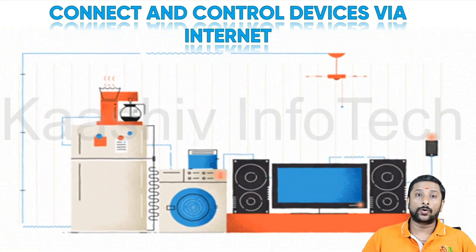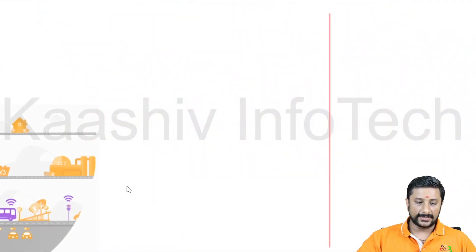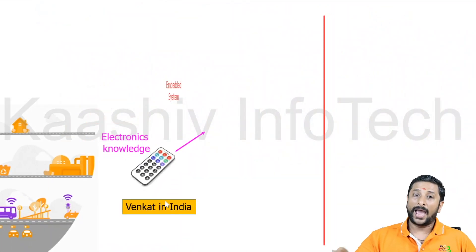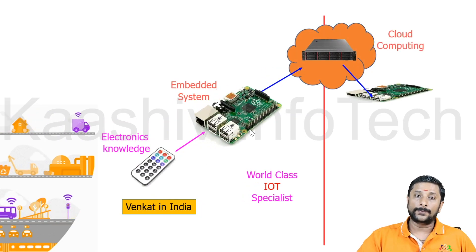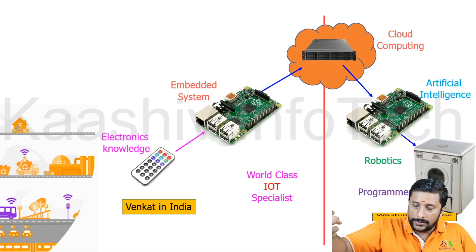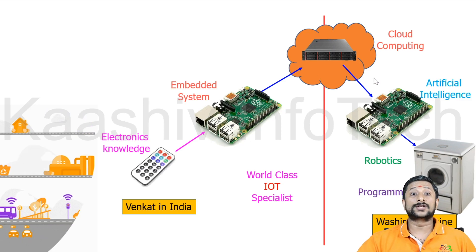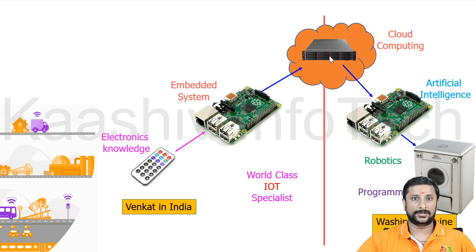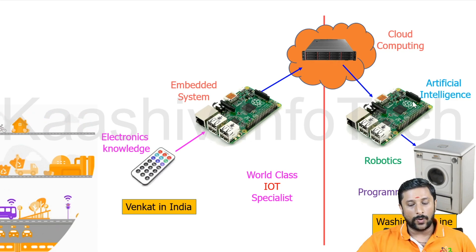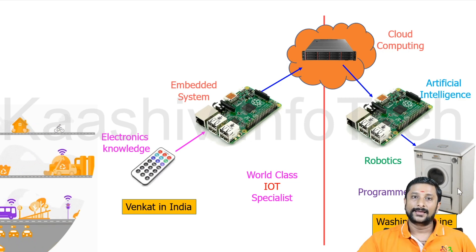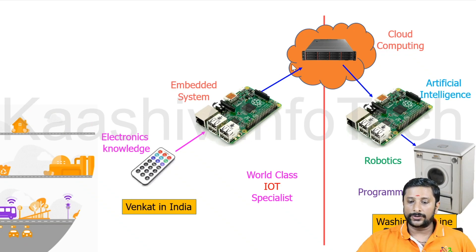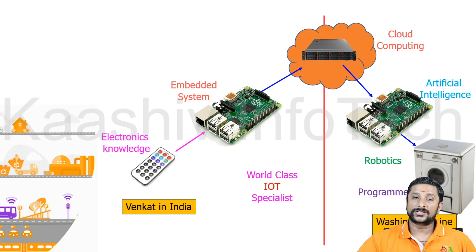Let's move on to a practical example of how IoT works. I have a remote and a hardware device. When I press the remote, the data is communicated to the hardware, and from there it goes to the internet. There are cloud servers where the data is stored once I press the remote. That data is then retrieved by a device to control something — that is Internet of Things. For example, a washing machine is in the US and I'm in India — I can control it via the internet. That is Internet of Things.